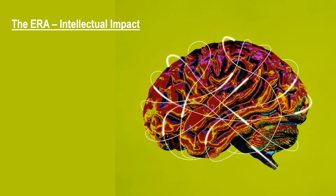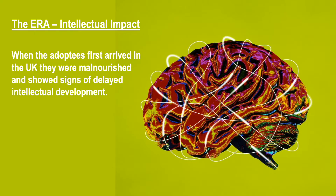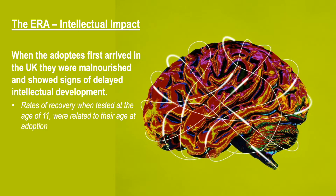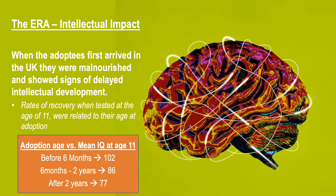Rutter found that upon arrival in Britain the adoptees showed signs of malnourishment and delayed intellectual development. When retested at age 11, their rates of recovery in terms of intellectual delay were dependent on their age at adoption — the older they were when adopted, the worse the delay. Children adopted before the age of six months had a mean IQ of 102, roughly on par with the control group, but this dropped to 86 and then to 77 for children adopted after two years.